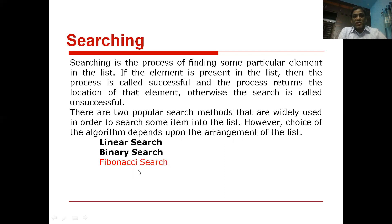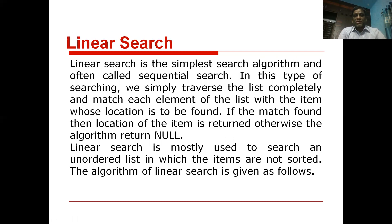Let us focus on the linear search algorithm — how it finds whether an element is present in the given list. Linear search is probably the simplest algorithm among all searching algorithms, but not very efficient in terms of time complexity. The algorithm compares the given key element with every element in the list, starting from the first element to the last, until the element is found or the entire list is completed.